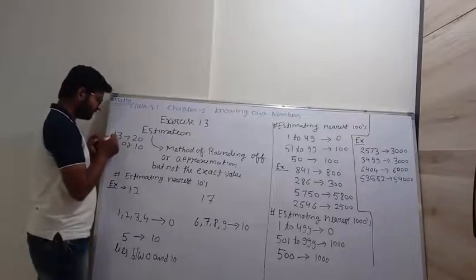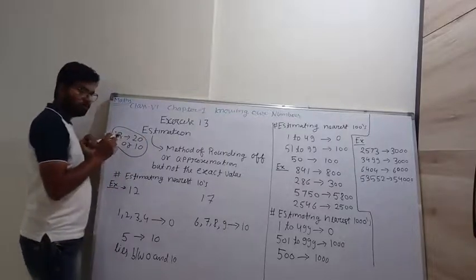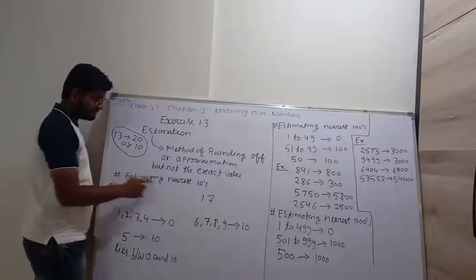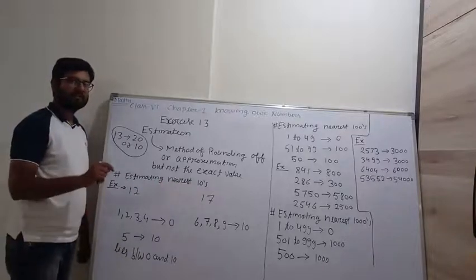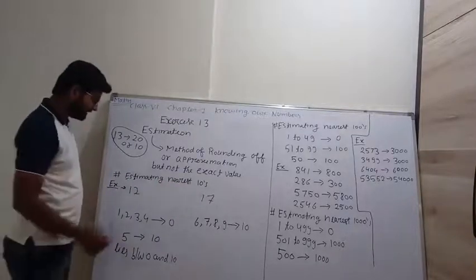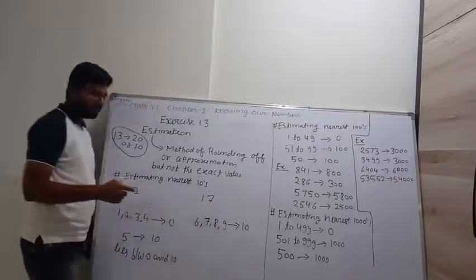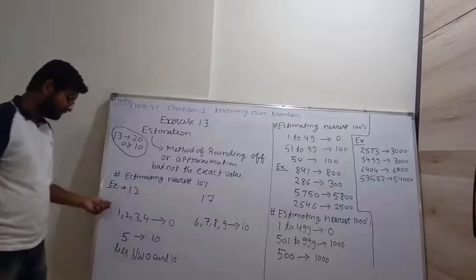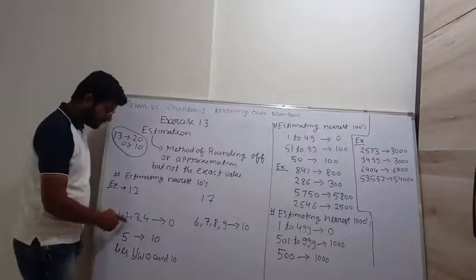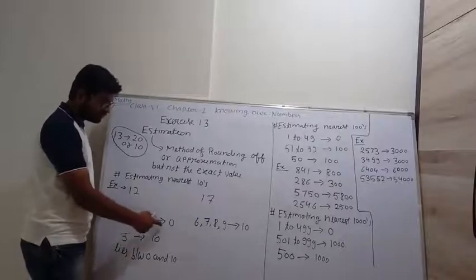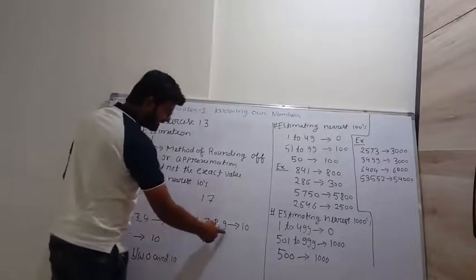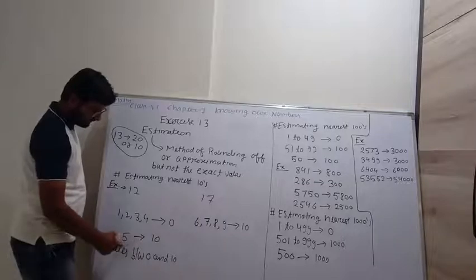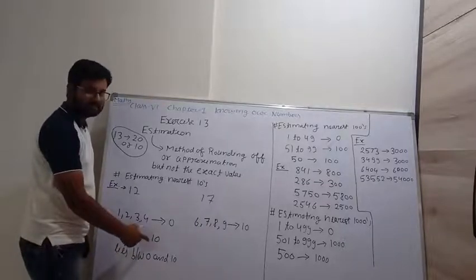There is some rule for estimation. First, estimation to nearest 10 value. If at the units place the digit is 1, 2, 3, or 4, we convert it into 0. And if it is 6, 7, 8, or 9, we convert it to the next 10. And if it is 5, it lies between 0 and 10, so we move towards 10.